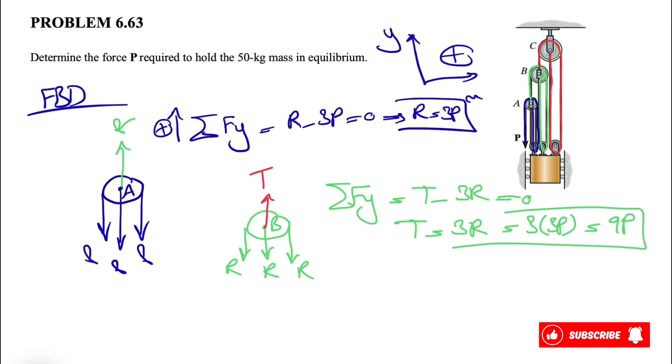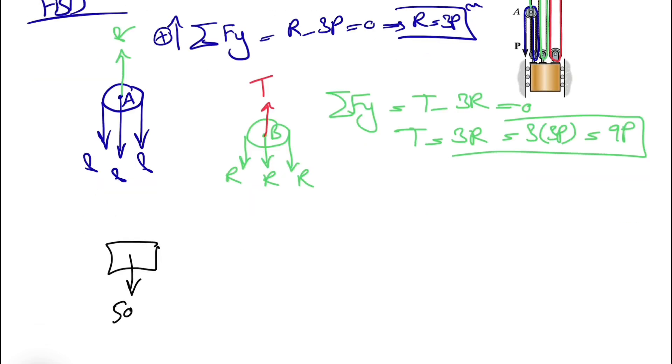We can move on to the free body diagram of the 50 kilogram mass. We have this, which we know has a weight of 50 kilogram. Obviously, we have the mass. If you want to find it in Newton, we have to multiply that by the acceleration of gravity, or g, which we know is 9.81 meter per square second.